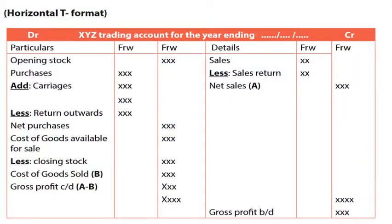We shall start with the horizontal format or T-format. When preparing your trading account, the title should come first. You have one side for Dr (debit) and Cr (credit). Then you include columns for particulars and francs — if it is Rwandan francs. Particulars is the same as details.